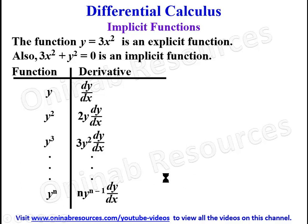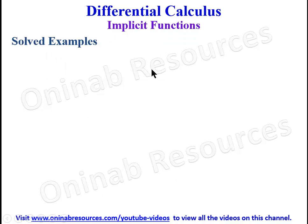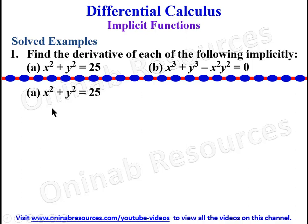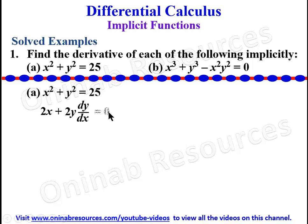We'll now look at some examples of differentiation of implicit functions. The first example asks us to find the derivative of each of the following implicitly. Starting with problem (a), the method of differentiating an implicit function is to differentiate term by term. Differentiating the first term x², the derivative is 2x. The derivative of y² is 2y·dy/dx, and the derivative of the constant is zero.